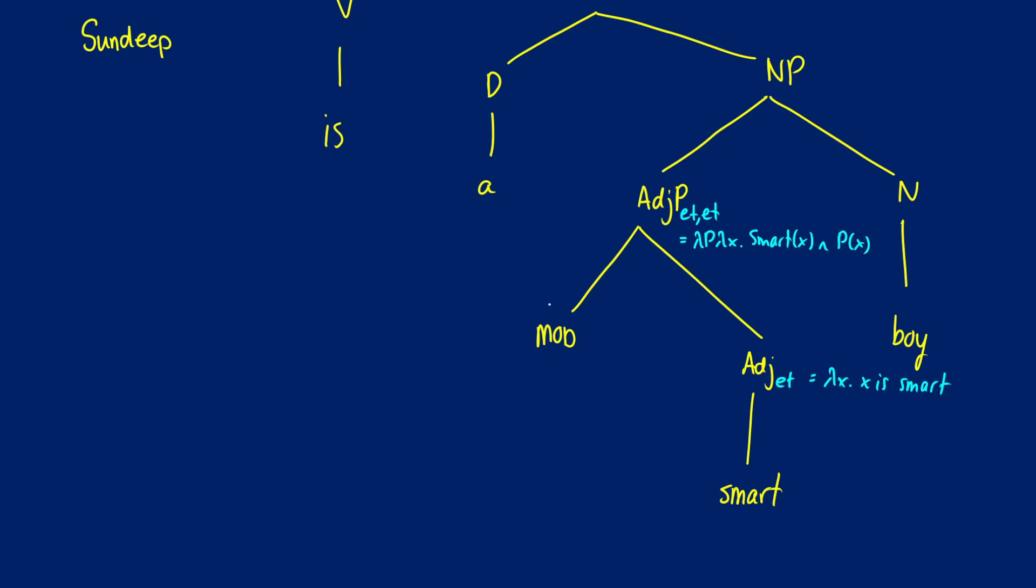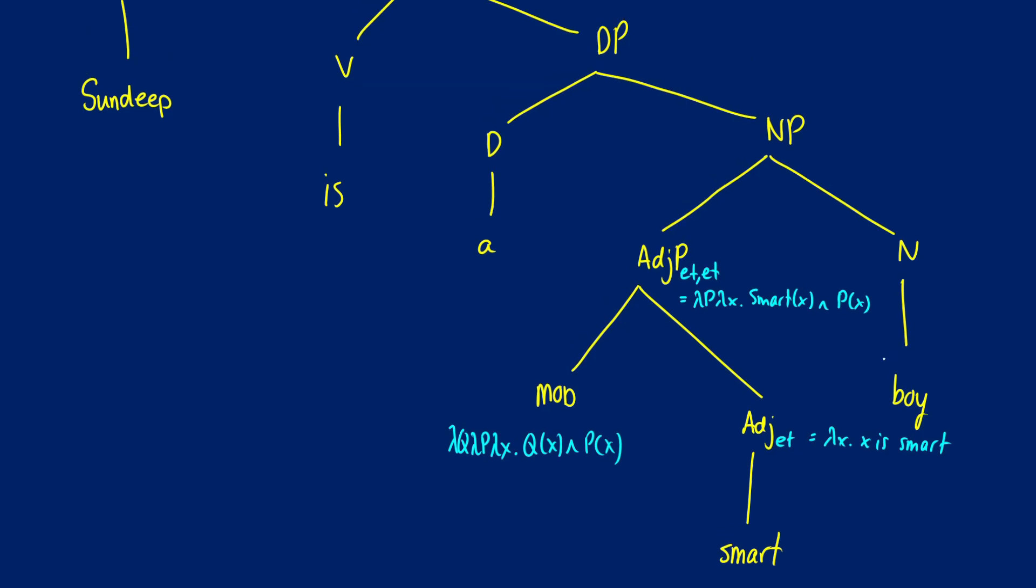And what we should be getting is lambda P lambda X. I'm just going to keep it in predicate logic for now. So smart X and PX for whatever PX is. So the modifier, we're basically just filling in what we had before. Remember, we're taking two predicates, P and Q. We're taking a variable X and we're taking the conjunction of those two to get the intersective meaning, QX and PX. So we do our application. We're going to get lambda P, lambda X, smart X and PX.